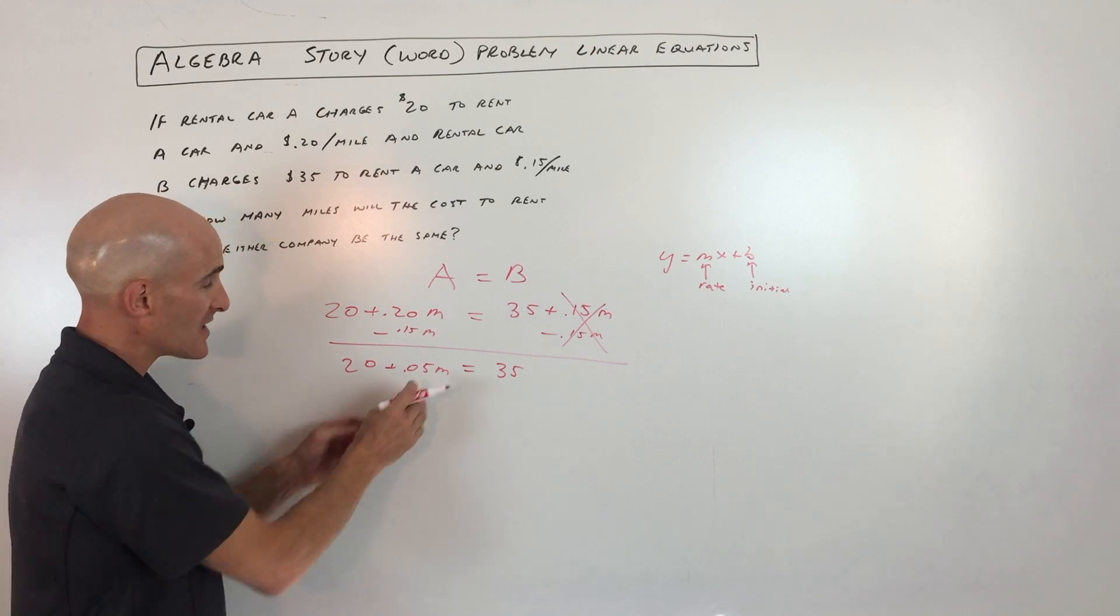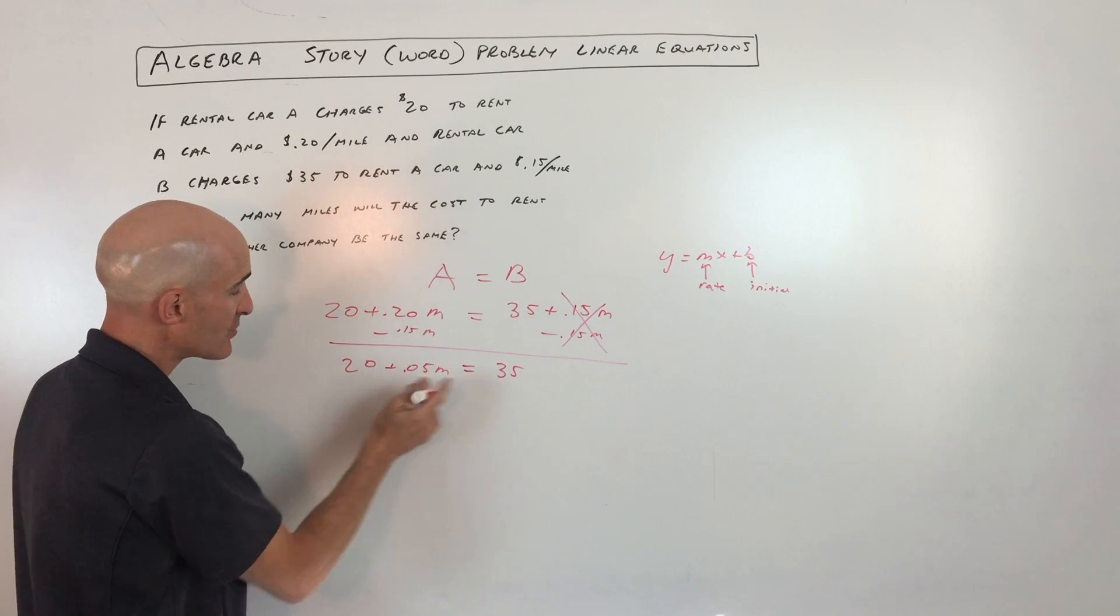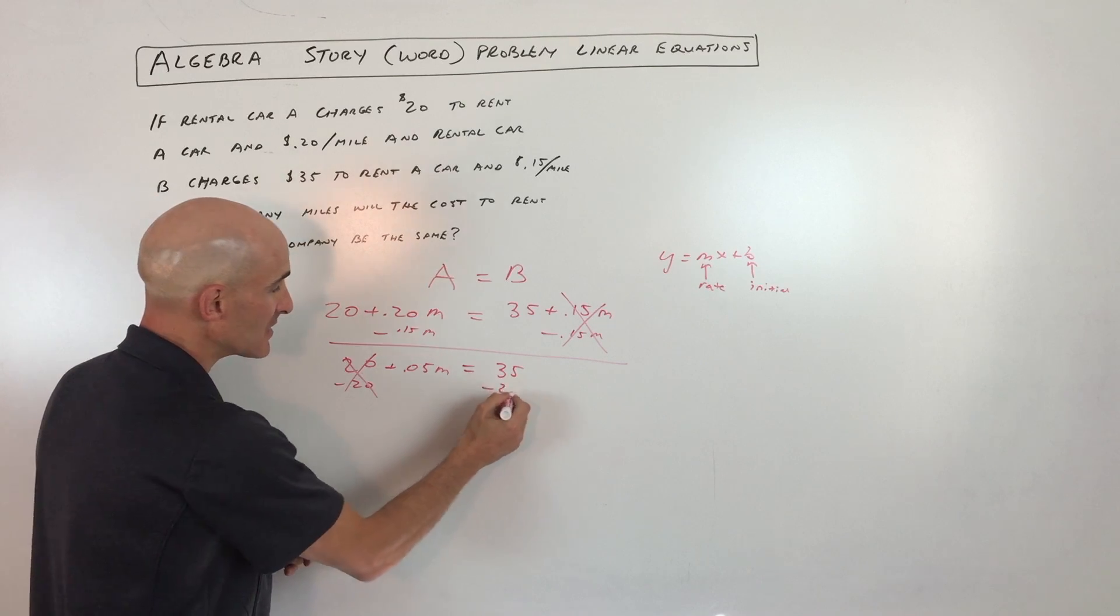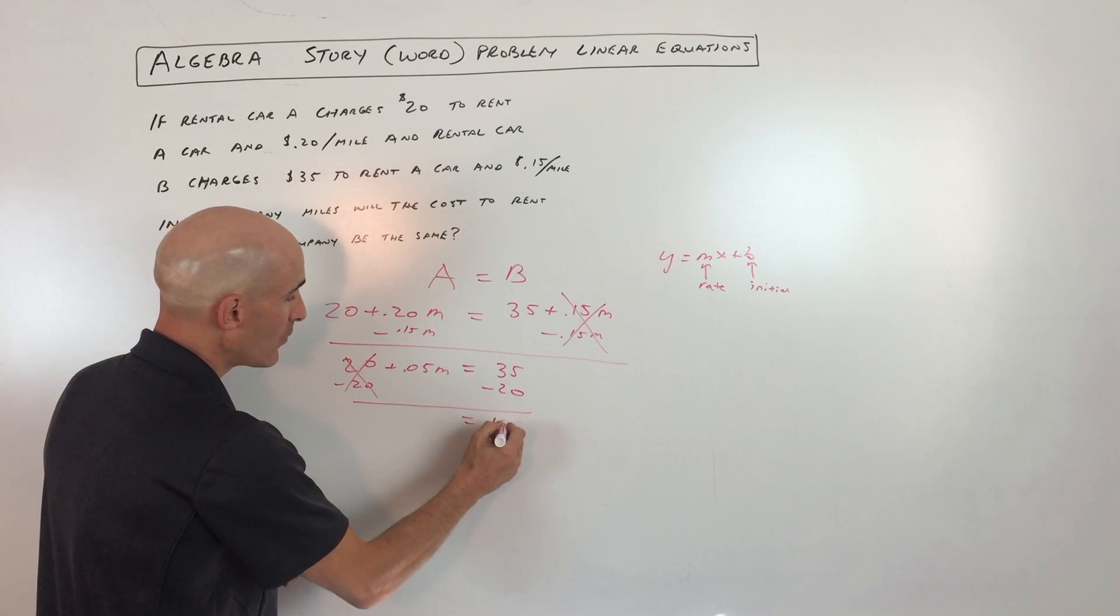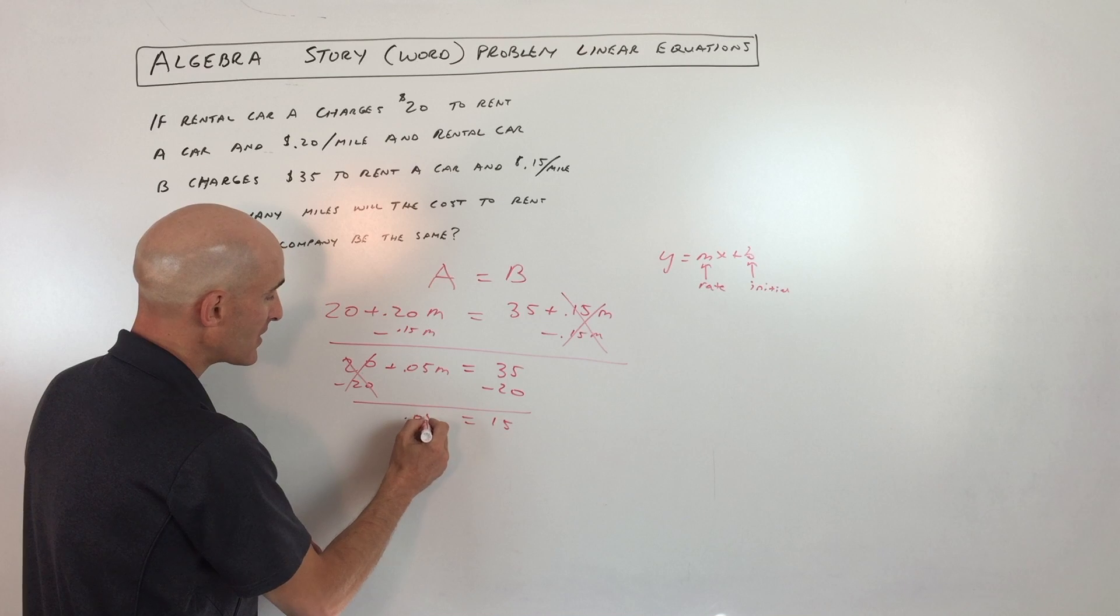Now if I subtract 20 from both sides because I want to get the variables by themselves here, the numbers on the other side, I want to get rid of this by doing the opposite. Subtract 20 on the other side, we get 15 equals 0.05m.